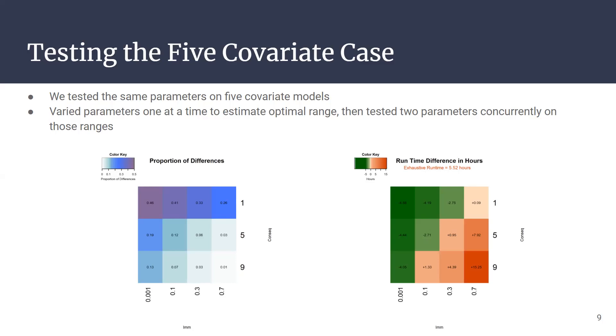In the top left, for example, we see there's a very high proportion of differences but a very low runtime. In the bottom right, we see a very low proportion of differences and a high runtime. So you want to choose a value that's somewhere in the middle. This runtime is plus or minus that of the exhaustive runtime.